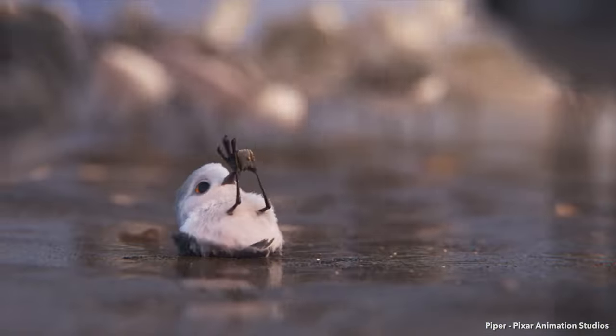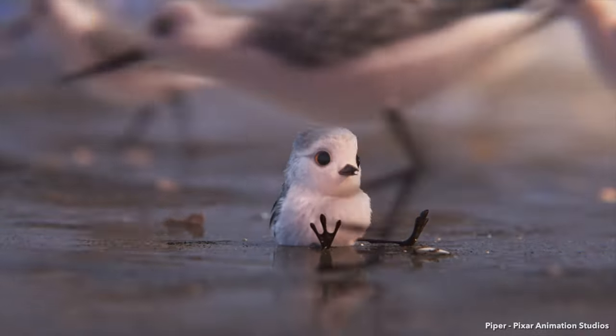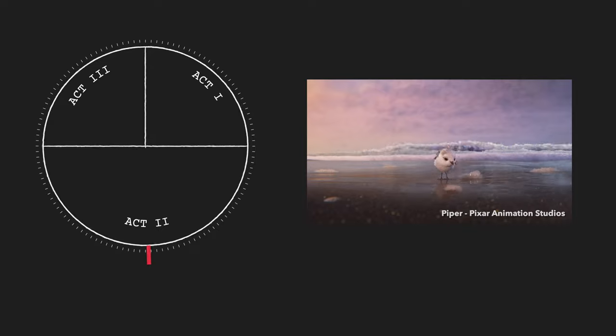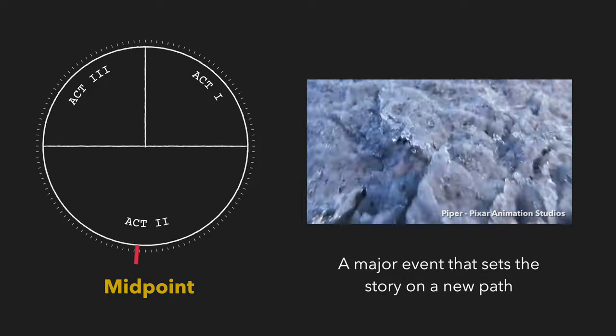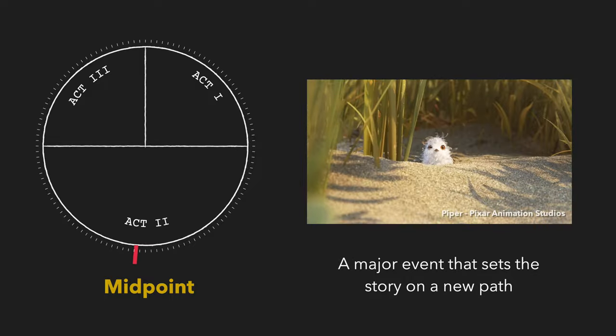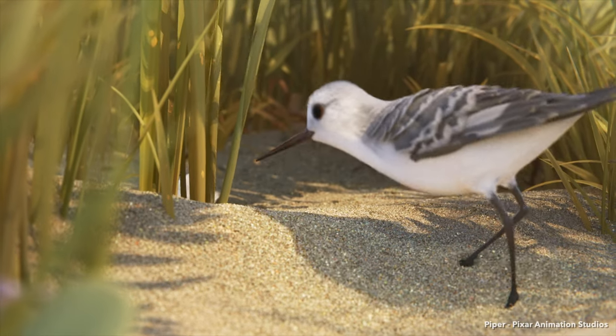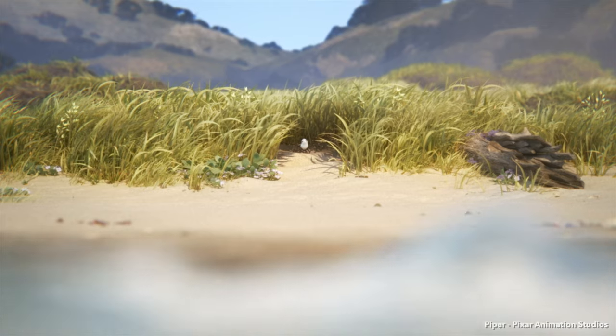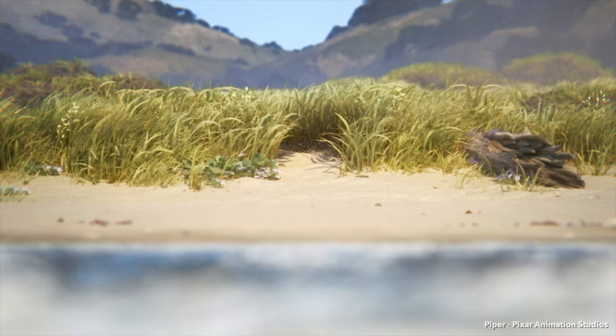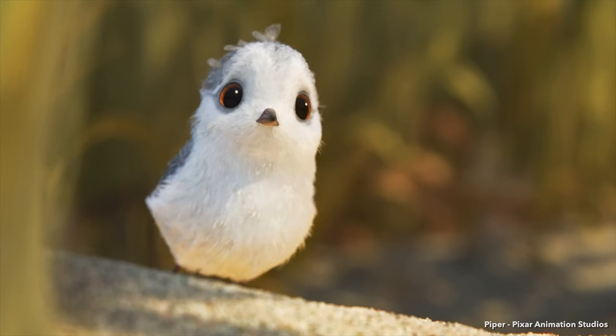Piper struggles to search for her food but keeps trying — until a wave crashes down on her. This is the midpoint, a major event that sets the story on a new path. Piper goes back to the nest, scared of the waves and convinced they are too strong for her. Piper has developed a false mentality — a lie: the water is dangerous and should be feared. She is now deeply afraid of the waves and terrified of leaving the nest.